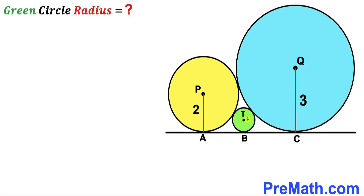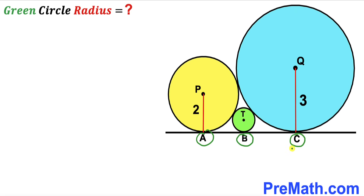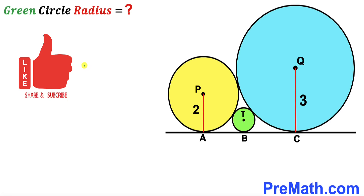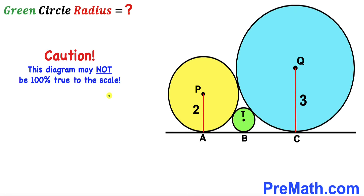Welcome to pre-math. In this video we have a green shaded circle fully confined between a yellow and a blue circle, as shown in the diagram, such that all three circles are tangent to each other. The center of the yellow circle is P, the center of the blue circle is Q, and the center of the green circle is T. Their points of tangency are A, B, and C respectively. The radius of the yellow circle is 2 units and the radius of the blue circle is 3 units. Our task is to calculate the radius of the green shaded circle. Please keep in mind that this figure may not be 100% true to scale.